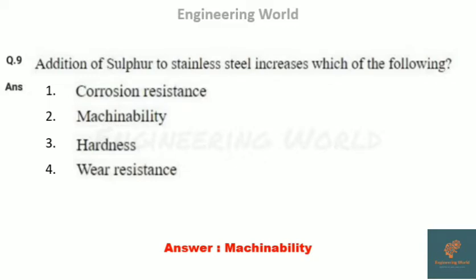The next question: addition of sulphur to stainless steel increases which property? Addition of sulphur to stainless steel increases the machinability of that stainless steel. The answer is machinability.